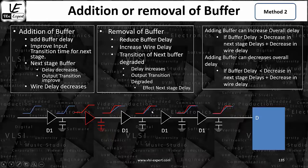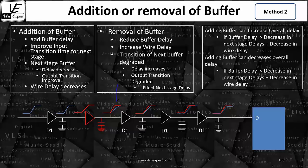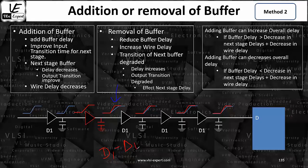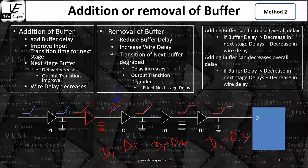Since the input transition has changed, the output transition of the next buffer is going to change as well. The same is going to happen with the other two scenarios. So the moment you add a buffer here, it is going to improve the transition time of all the buffers in the next stage. Now, because this delay D1 is with respect to the blue one and not the red one, if the transition time changes, there will be a change in the delay also.